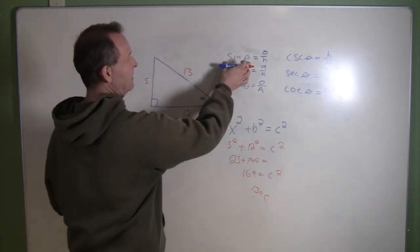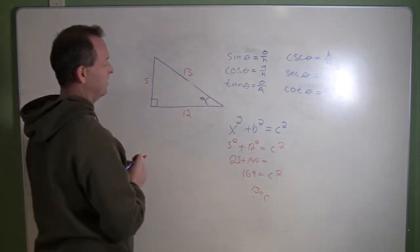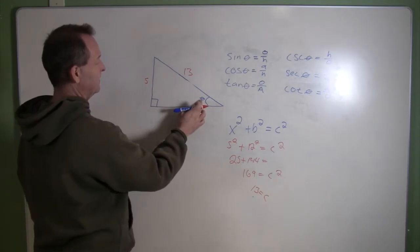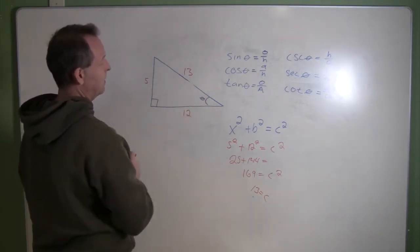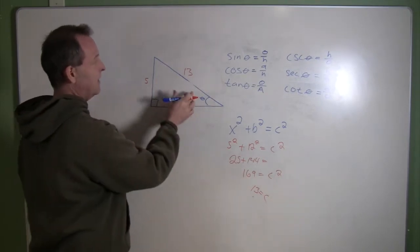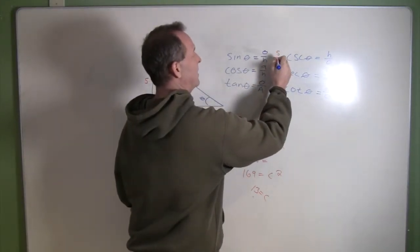So the sine of theta is its opposite over hypotenuse. So here's my theta, this is my opposite leg, this is my hypotenuse. So therefore the sine of theta in this case would be 5/13.